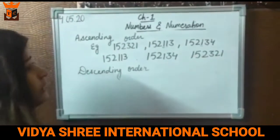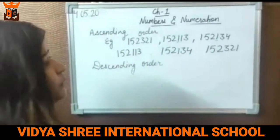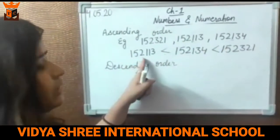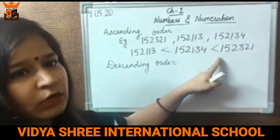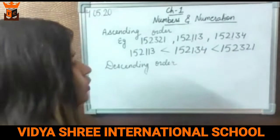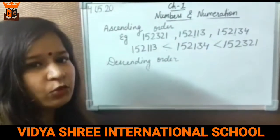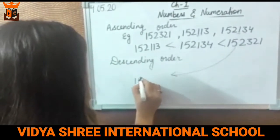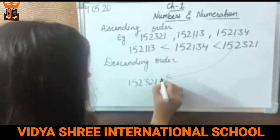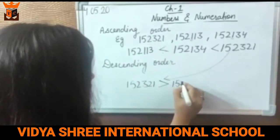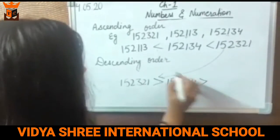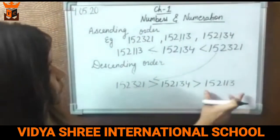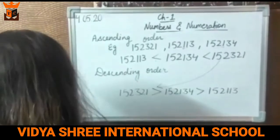Always remember: when arranging numbers in ascending order, put the less-than sign between them, because we are going from smallest to greatest. In descending order, you do the reciprocal — 152321 is greater than 152134, which is greater than 152113. In descending order, the greatest comes first and the smallest comes last.